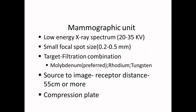In mammography, the focal spot size must be very small — in the range of 0.2 to 0.5 millimeters — for high resolution, compared to over 1 mm in conventional X-ray tubes. The target-filter combination is typically molybdenum or rhodium/tungsten with matching filters. A high-transmission cellular (HTC) grid is used. The source-to-image receptor distance is around 55 centimeters, compared to about 100 centimeters in conventional X-ray, and a compression plate is applied.